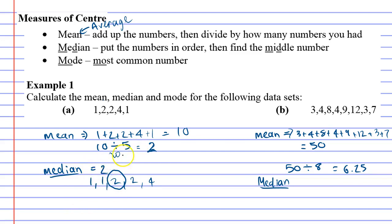And then the median means once it's in order, find the middle number, which in this case is 2. So as we can see, the mean and the median are the same for question A. And that happens quite often, or at least get very close.